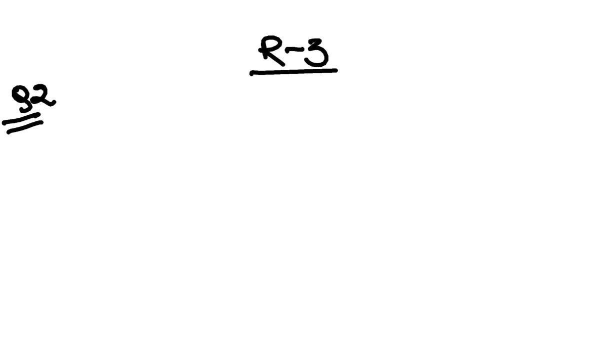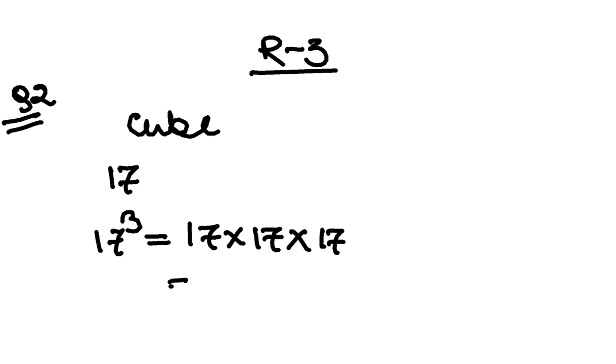Revision 3, question number 2 is a very simple question. All you have to do is find the cube of the given numbers. Let's say 17, so you have to find 17 cube. 17 cube is 17 into 17 into 17. You can multiply and find the final value. You can easily skip this question. Now let's go to question number 3.